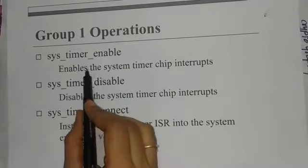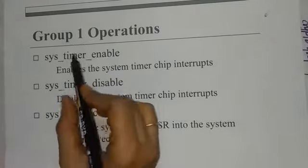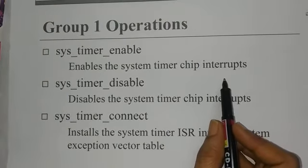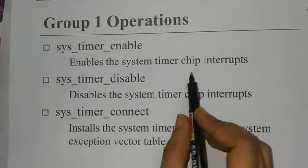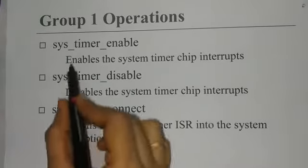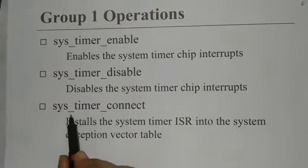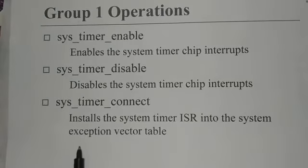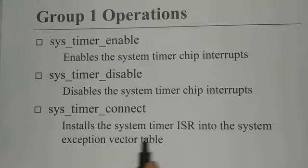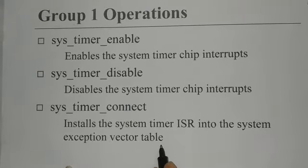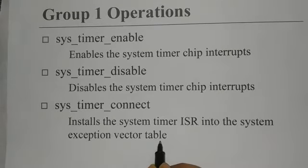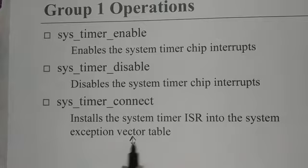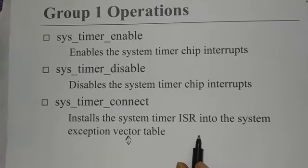The core operations of Group 1 are as follows. First, system timer enable enables the system timer chip interrupts. Each element in the timer mechanism is maintained by chips, so enabling, disabling, set, and reset are all interchangeable operations on timers. Next, system timer connect installs the system timer ISR into the system exception vector table — also called the interrupt vector table — which stores information about how many interrupts are occurring, their execution state, and related ISR information.